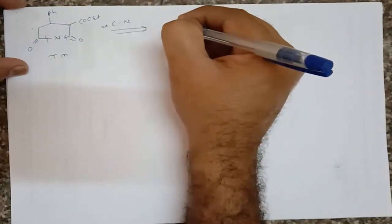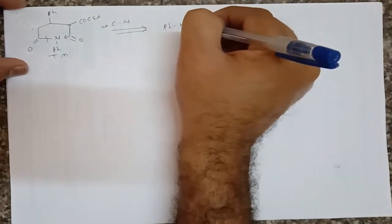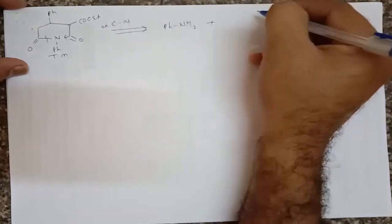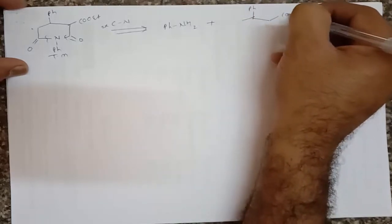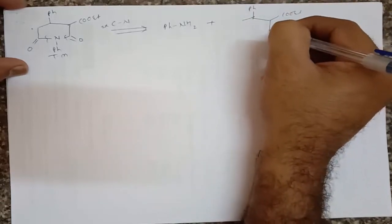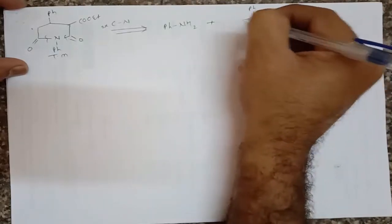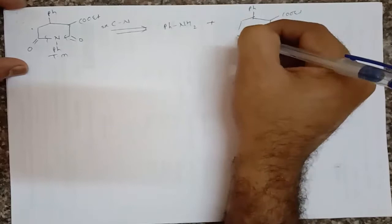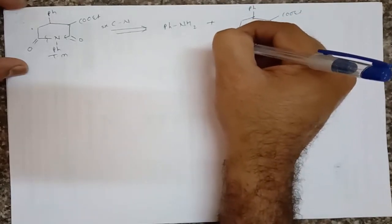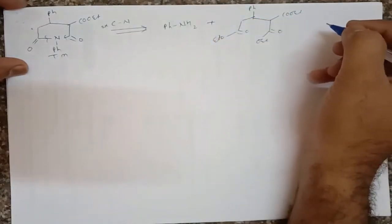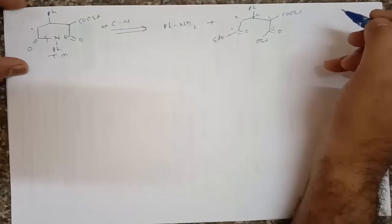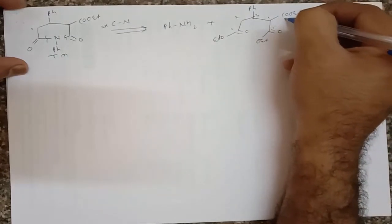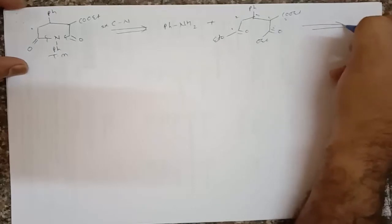So breaking these two C-N bonds gives: from one side a phenylamine — that is aniline — along with the remaining functional group containing Ph, COOEt, and we want to take a good leaving group — that is an EtO group, meaning an ester. Again, counting positions 1, 2, 3, 4, 5 — it is a 1,5-dicarbonyl compound. Therefore we can break the C3-C4 bond of this 1,5-dicarbonyl compound.